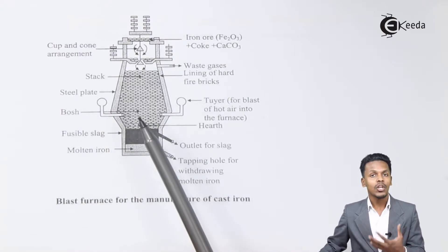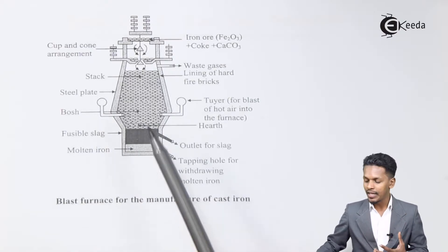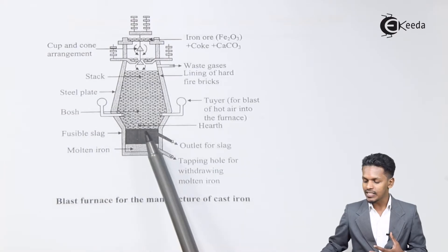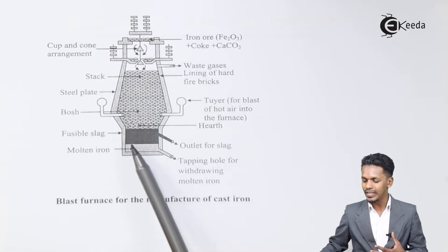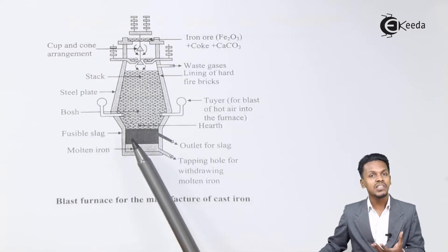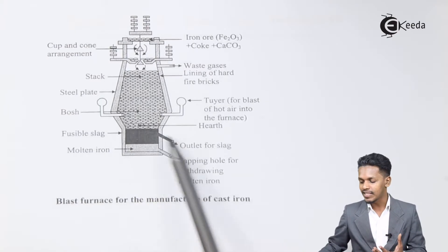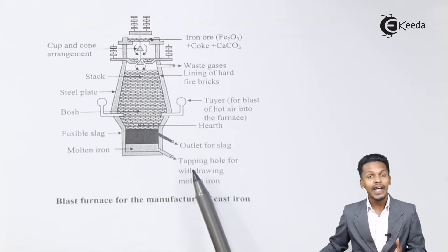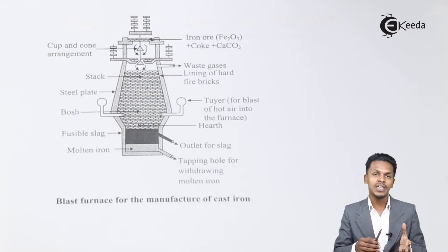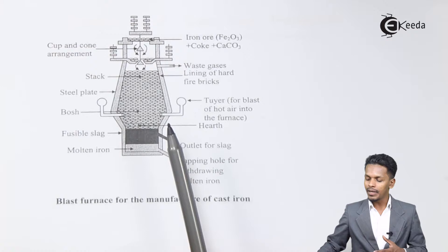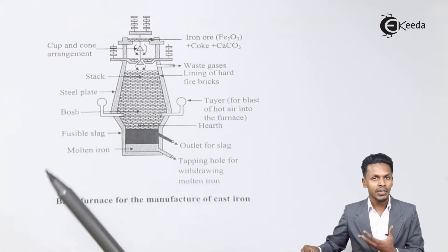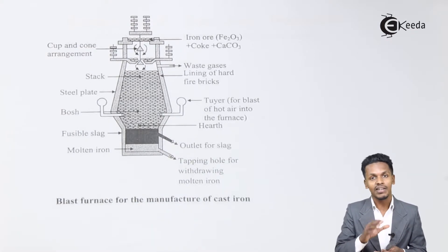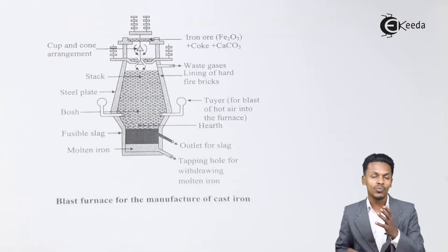The tuyeres are the source where a blast of hot air enters the blast furnace, converting the ore into a crude metal. The fusible slag sits above the surface of the molten iron and can be separated out, after which we obtain the molten iron. This can be further purified to get pure iron.